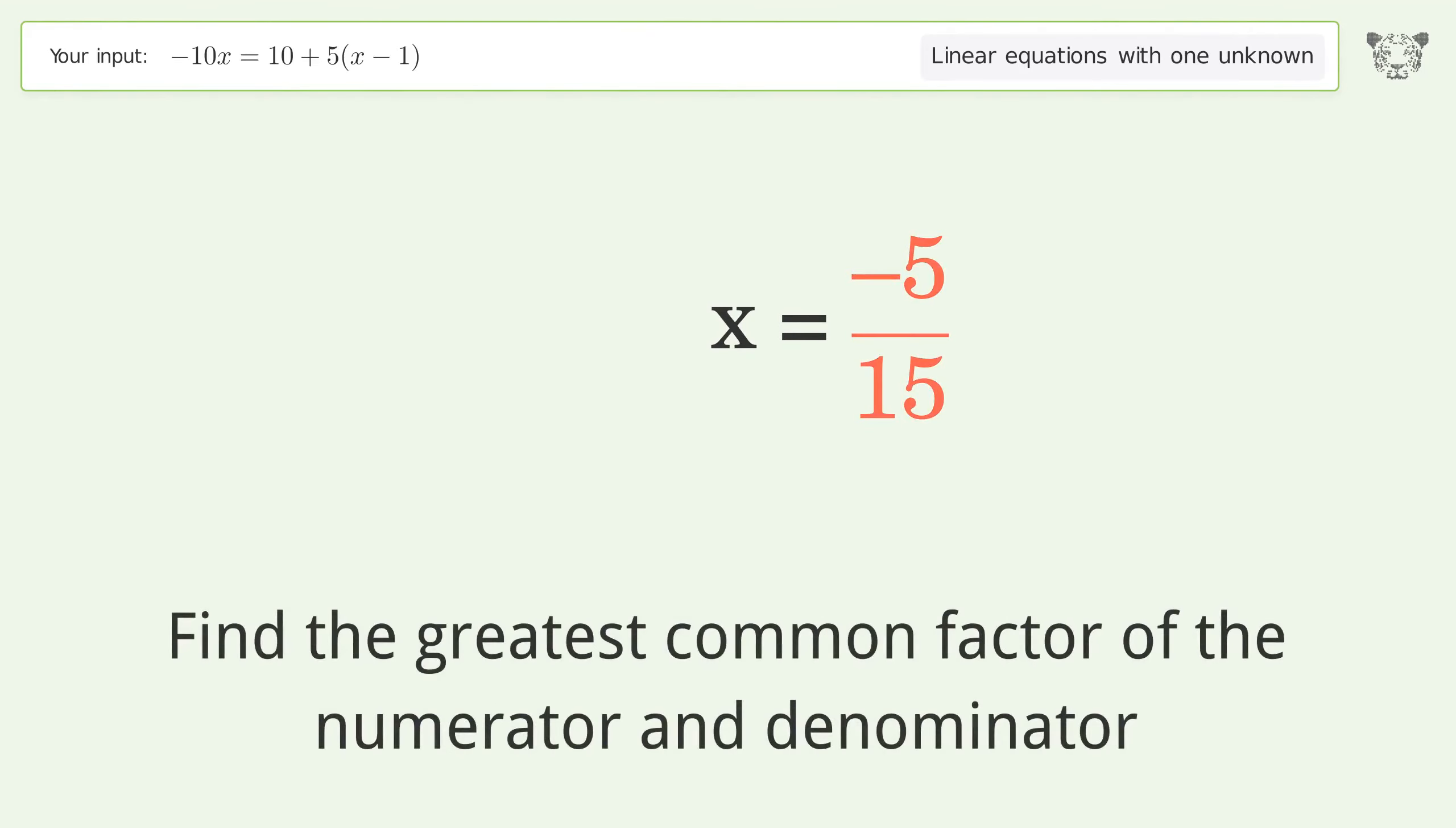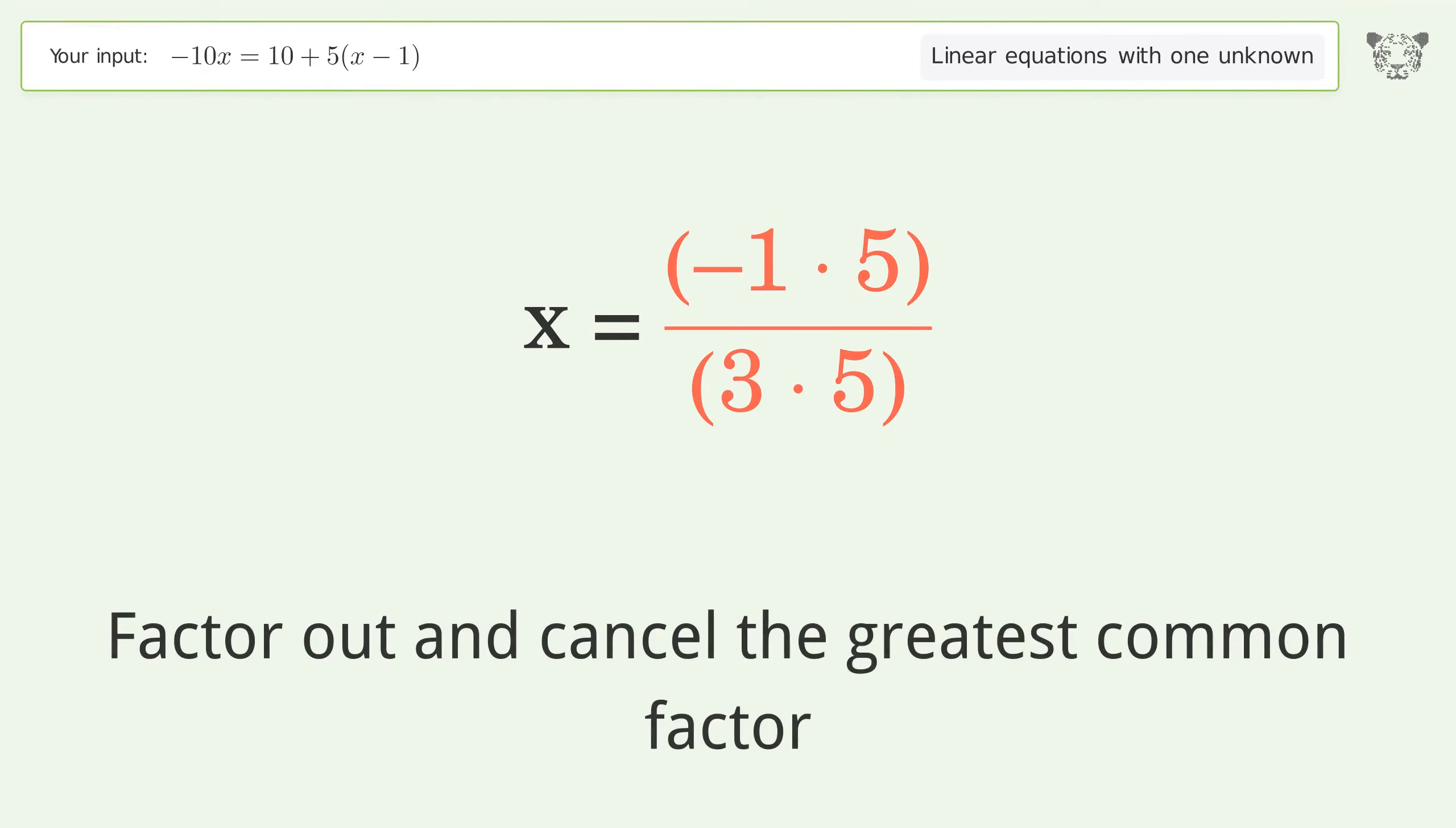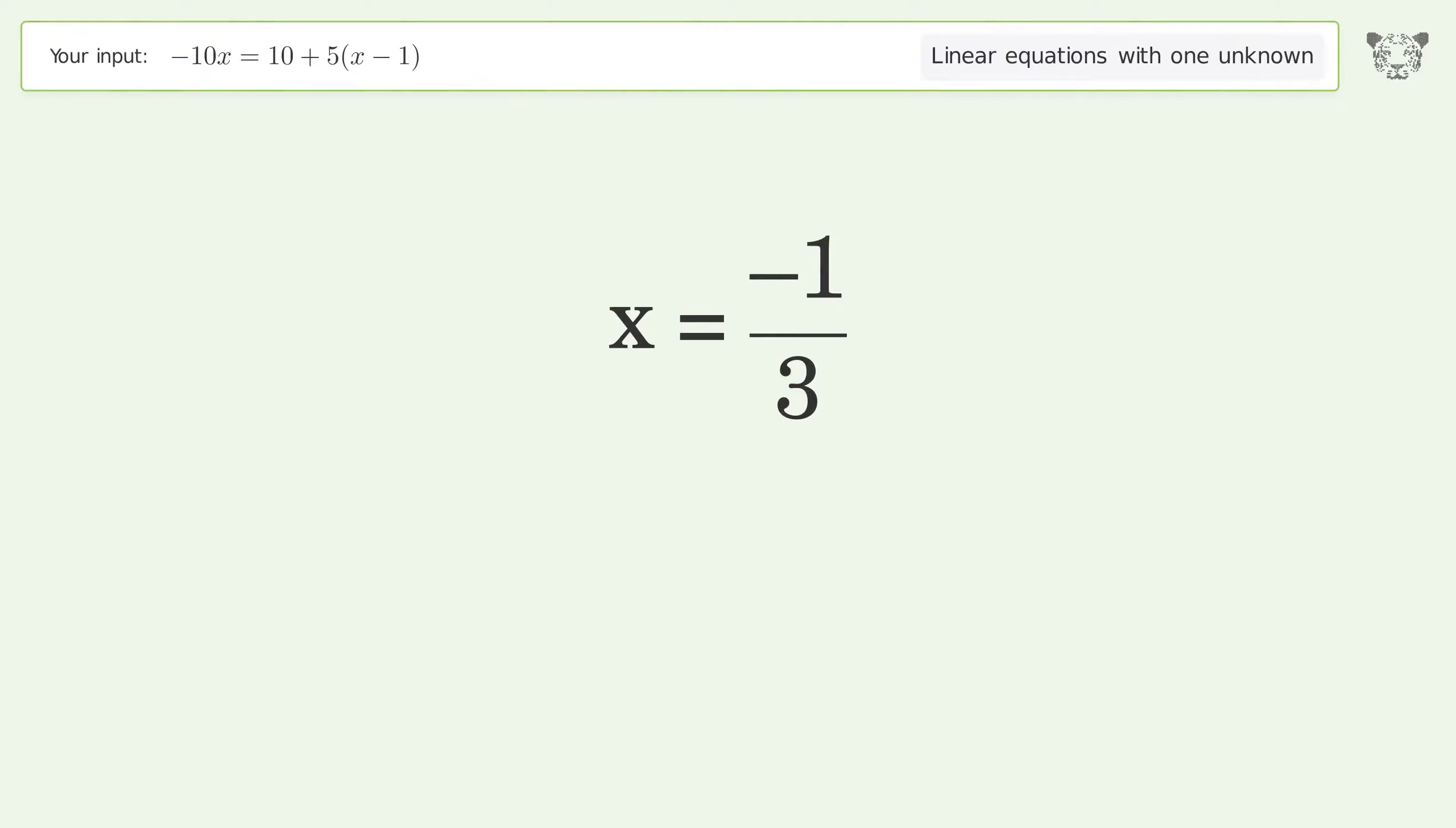Find the greatest common factor of the numerator and denominator. Factor out and cancel the greatest common factor. And so the final result is x equals negative one over three.